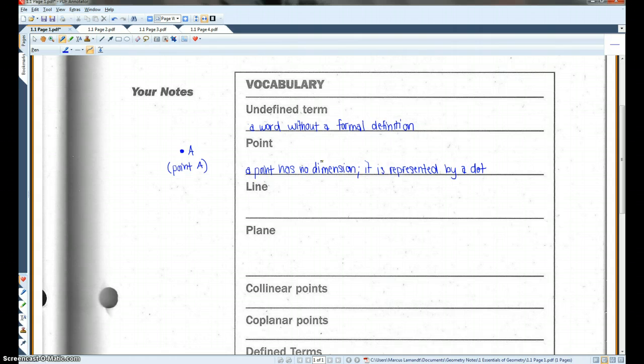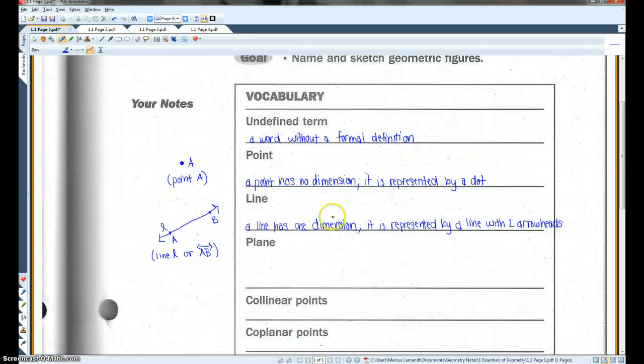All right, a line has one dimension. It's represented by a line with two arrowheads. I'll draw that for you guys. So this would be an example of a line. You could call this either line L. I drew the L in cursive. Or you could call it line AB or line BA. Either way. These arrows signify that this line continues on and on and on forever in both directions. So even though my line is only a couple inches long, technically this line is supposed to continue on infinitely in both directions. That's what the arrows mean.